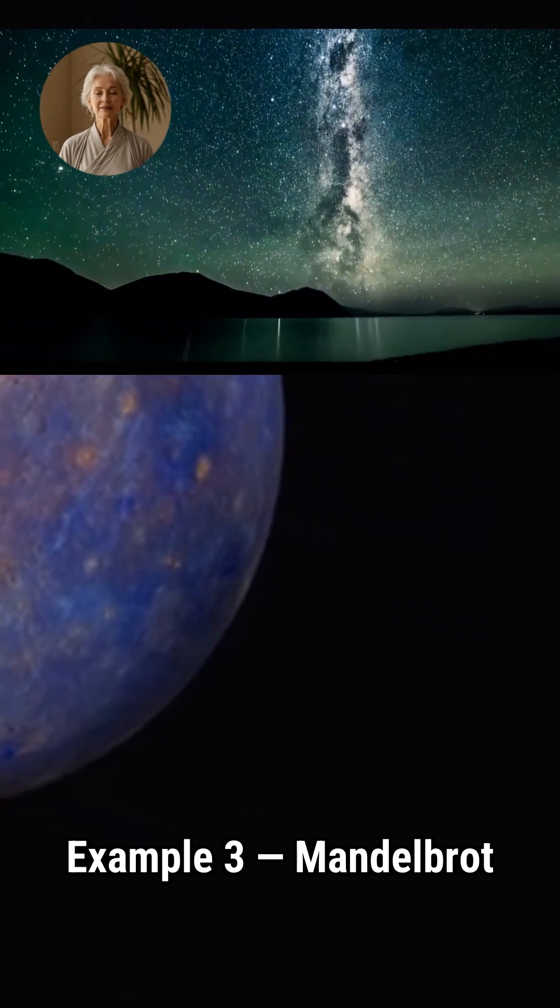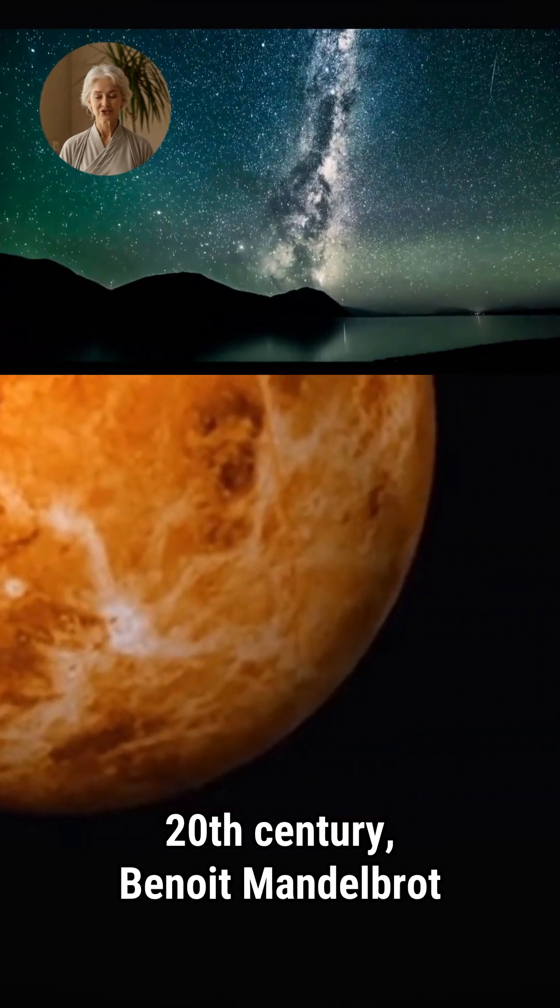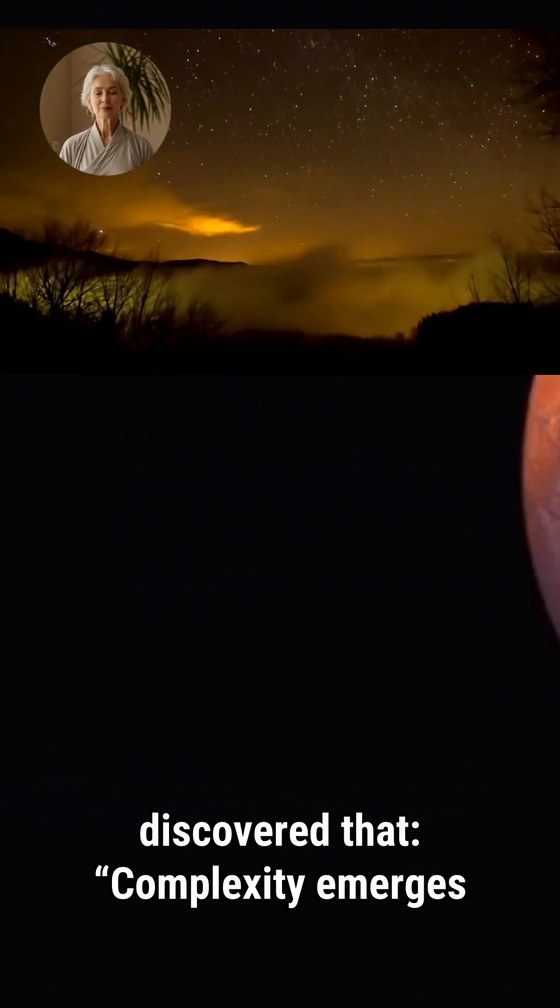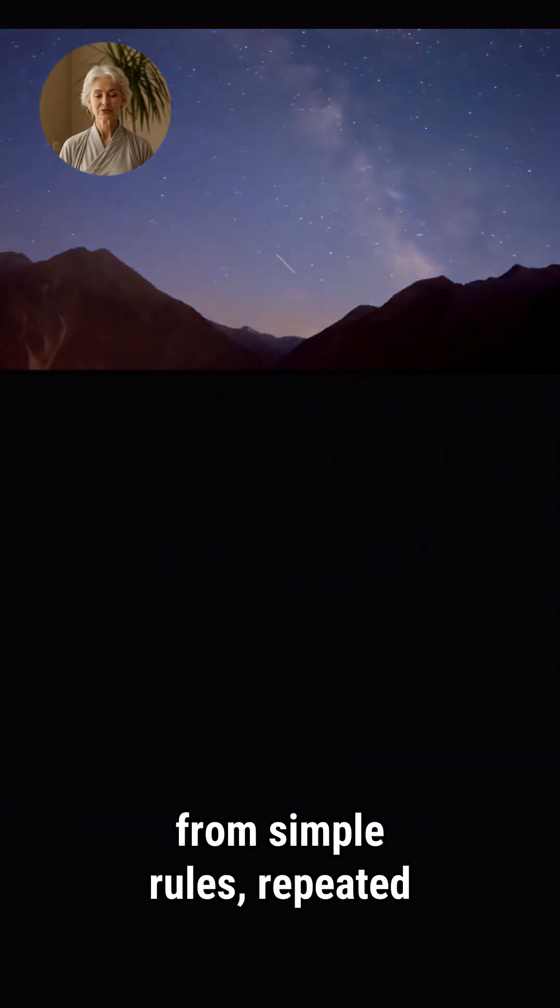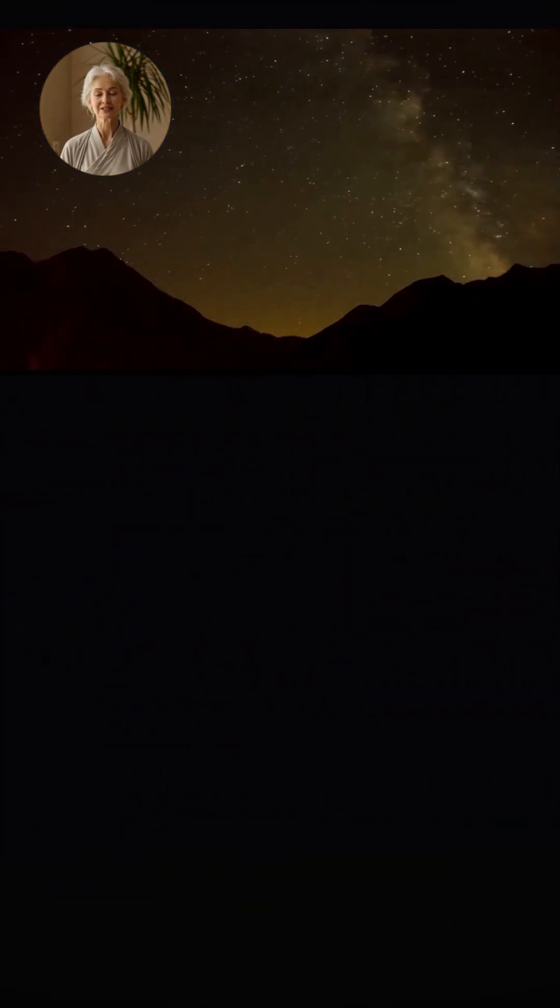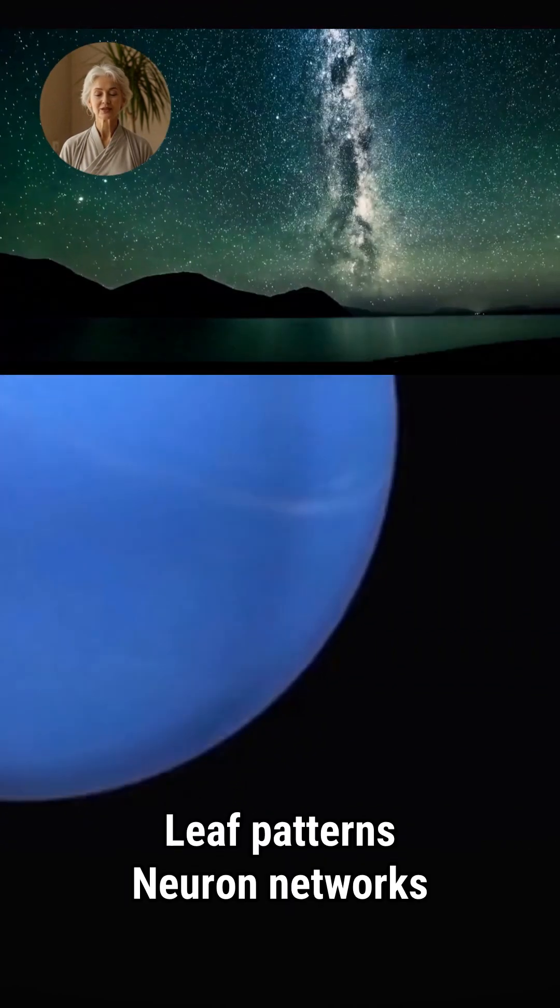Example 3. Mandelbrot and Mathematics. In the 20th century, Benoit Mandelbrot discovered that complexity emerges from simple rules, repeated endlessly. This rule explains galaxy formation, lightning branches, leaf patterns, neuron networks.